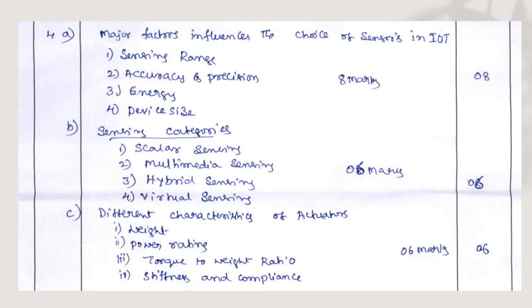For sensing categories — scalar sensing, multimedia, hybrid, and virtual sensing — listing them carries 2 marks and explanation carries 4 marks, so totally 6 marks. For characteristics of actuators — weight, power rating, torque-weight ratio, stiffness, and compliance — listing them is 2 marks and explanation is 4 marks, so totally 6 marks.